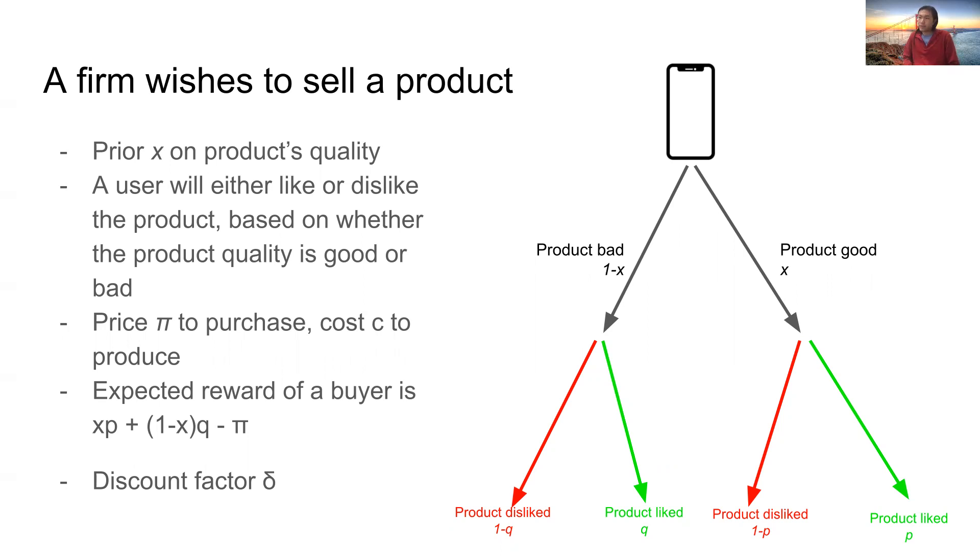There is a price pi to purchase the product and a cost C to produce the product. The expected reward of a buyer, thus, is Xp plus 1 minus X times Q minus pi. As the firm wishes to calculate the expected revenue of the product, we also consider a discount factor delta.